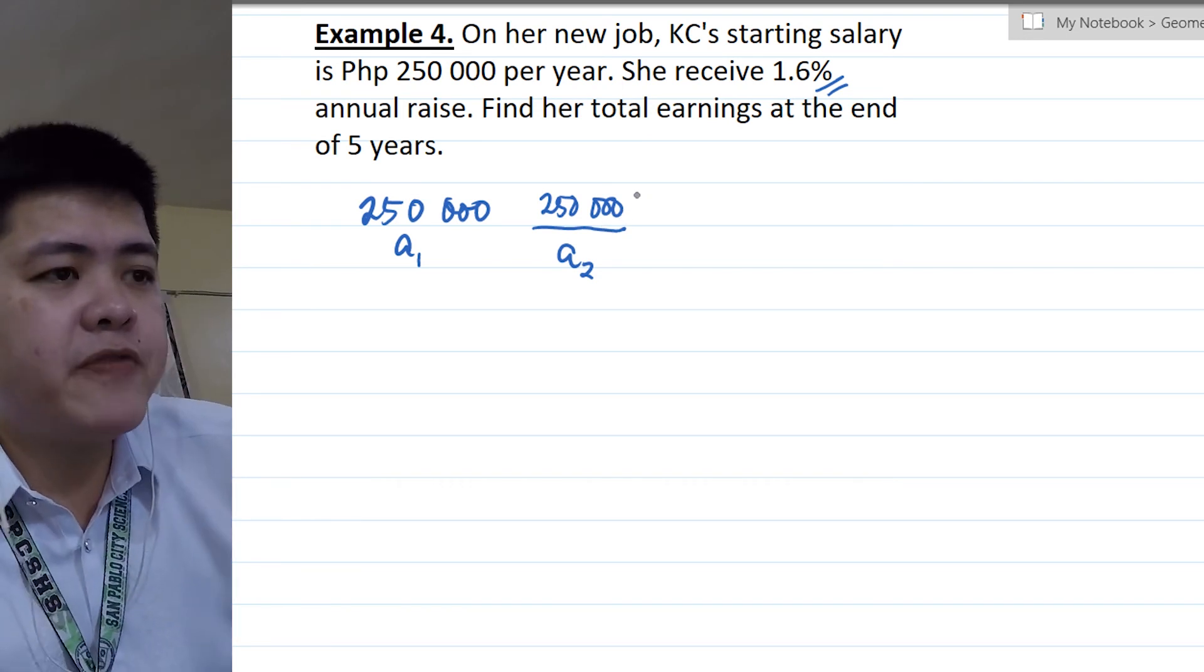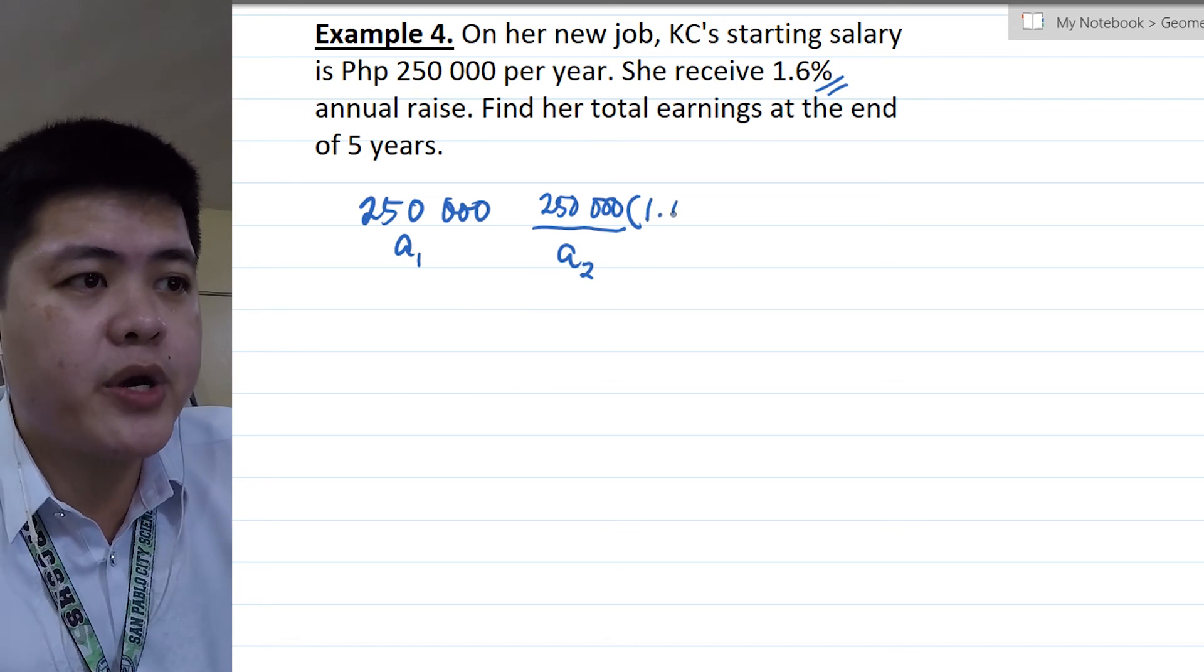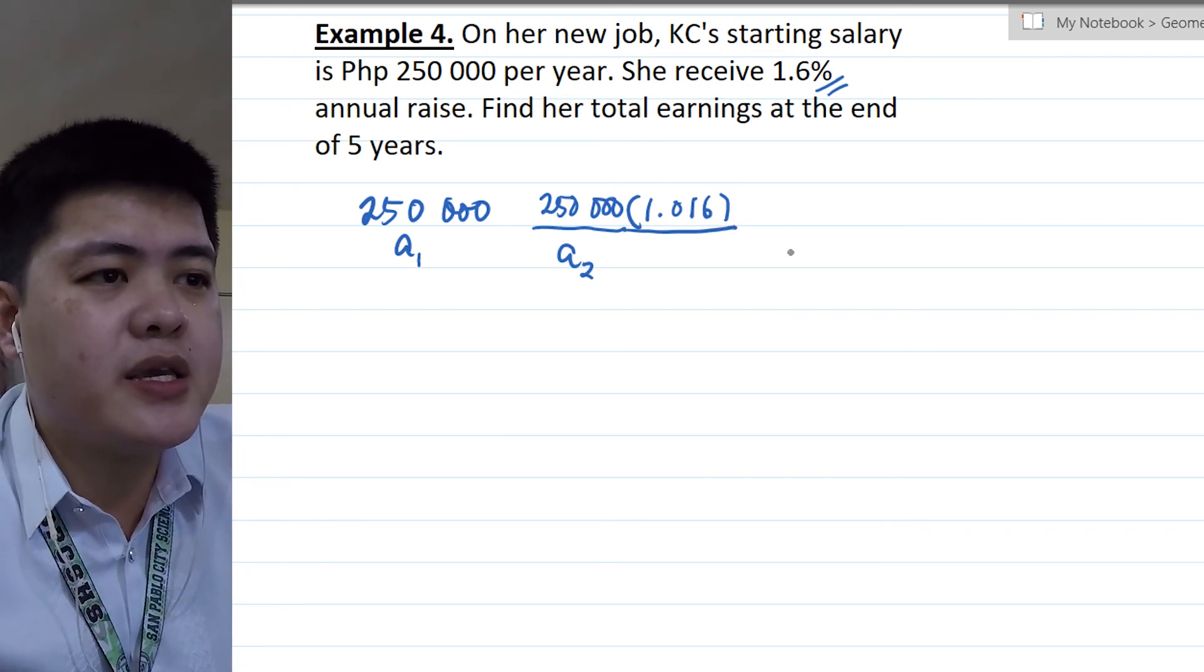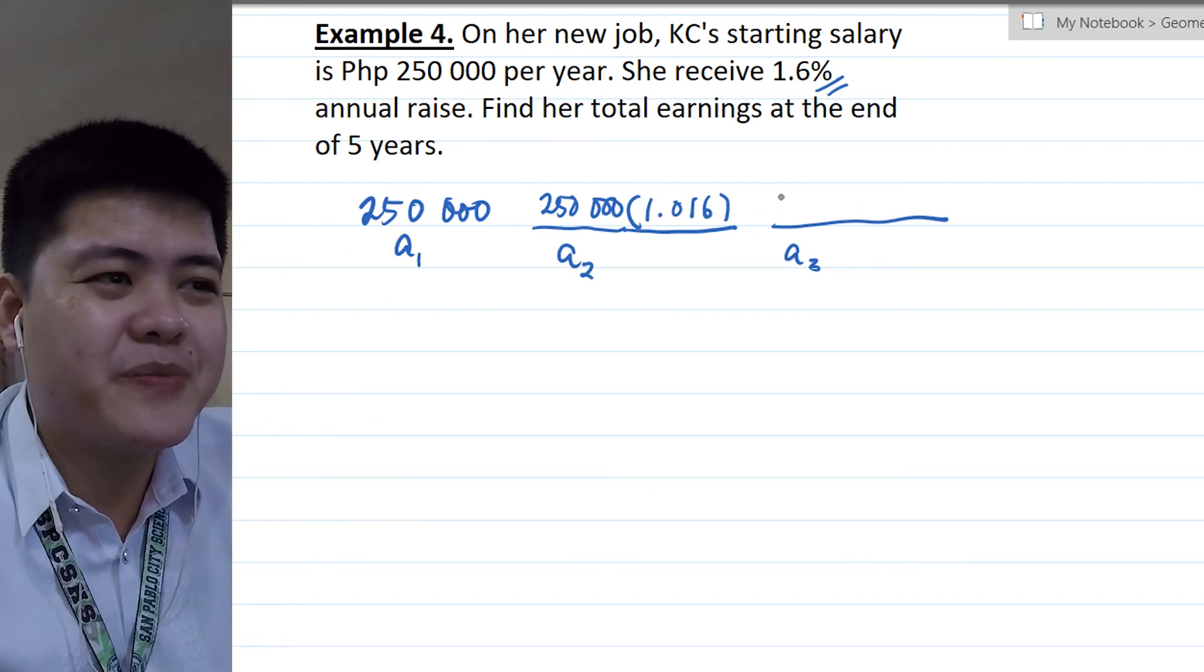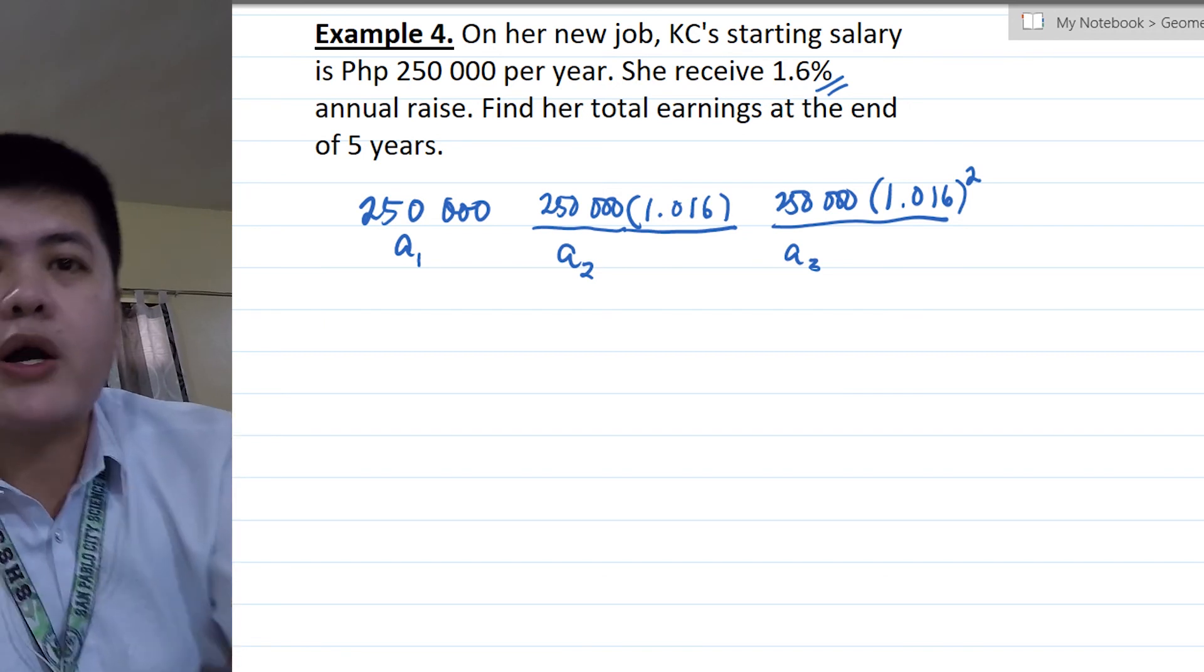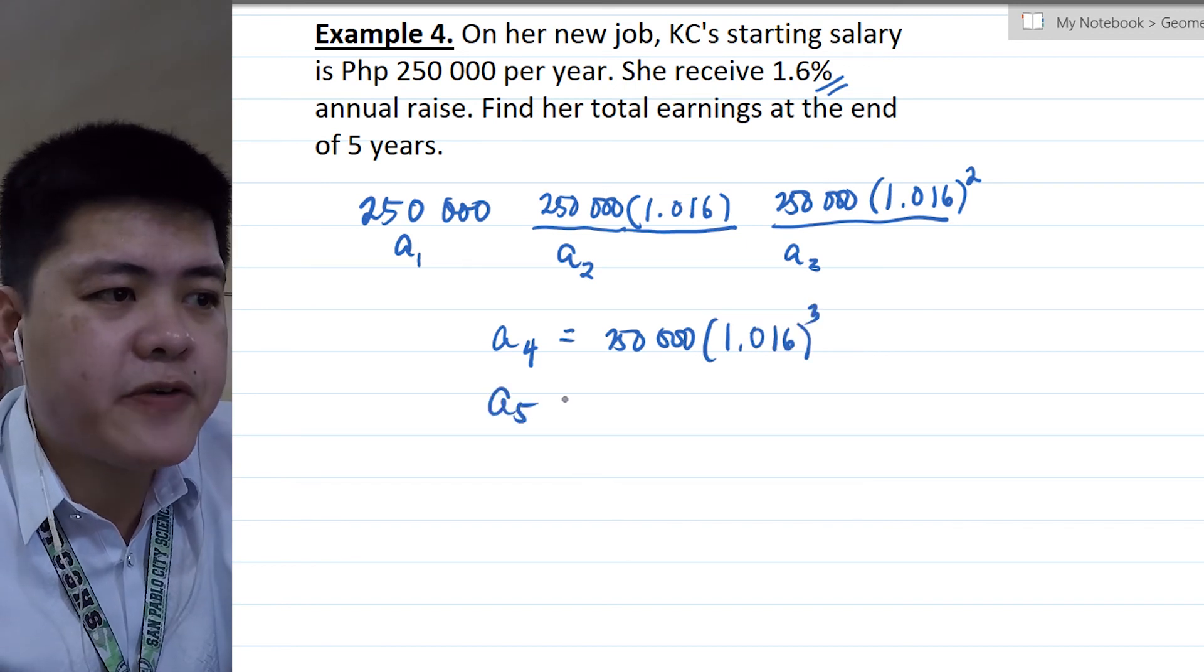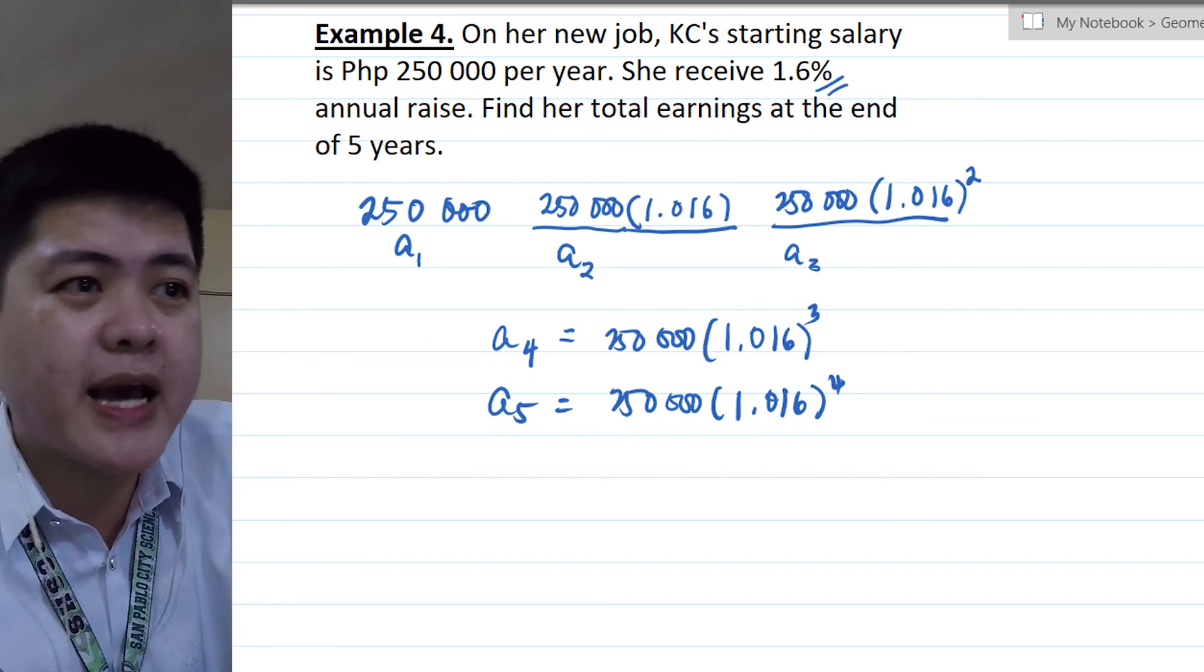It's the same thing as multiplying or getting the 1.6% of 250 and then adding it again to 250. It's the same as multiplying it by 1.016. Your A sub 3, you're going to multiply it again. Whatever A sub 2 is, multiply it by 1.016 again. Or 250,000 times 1.016 raised to 2. So we need up to A sub 5. So we have A sub 4 here, which is 250,000 times 1.016 raised to 3. And the fifth term is 250,000 times 1.016 raised to 4. But what we need is the summation of all her earnings for 5 years.